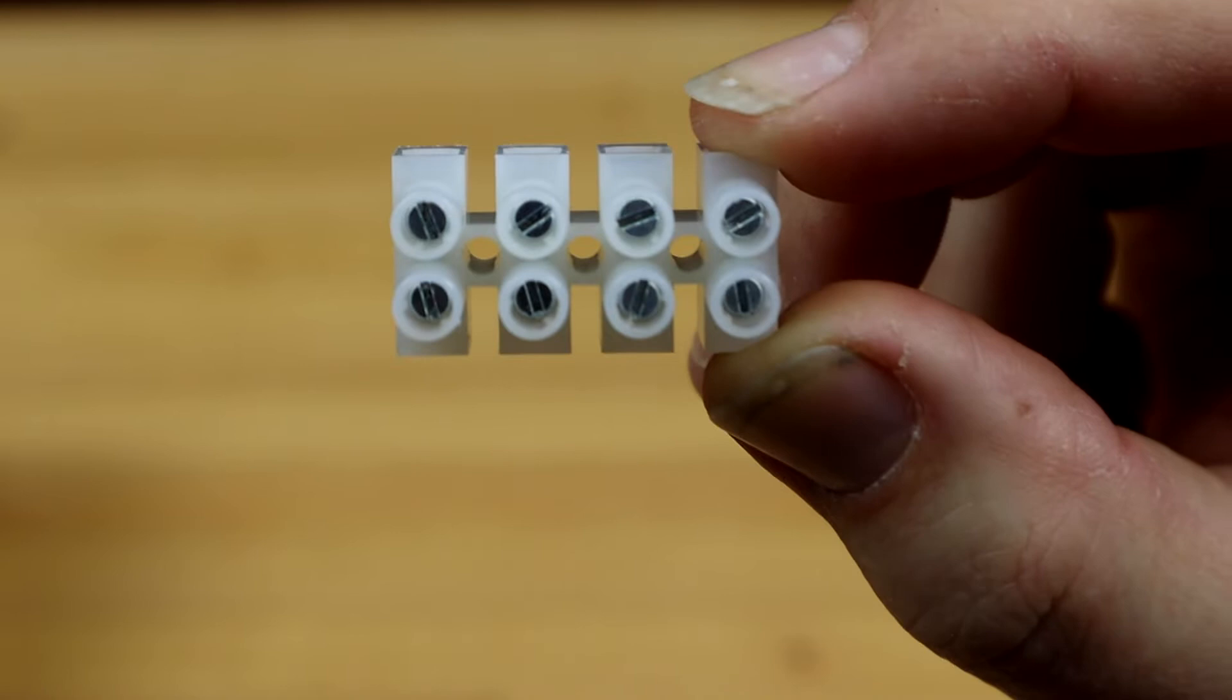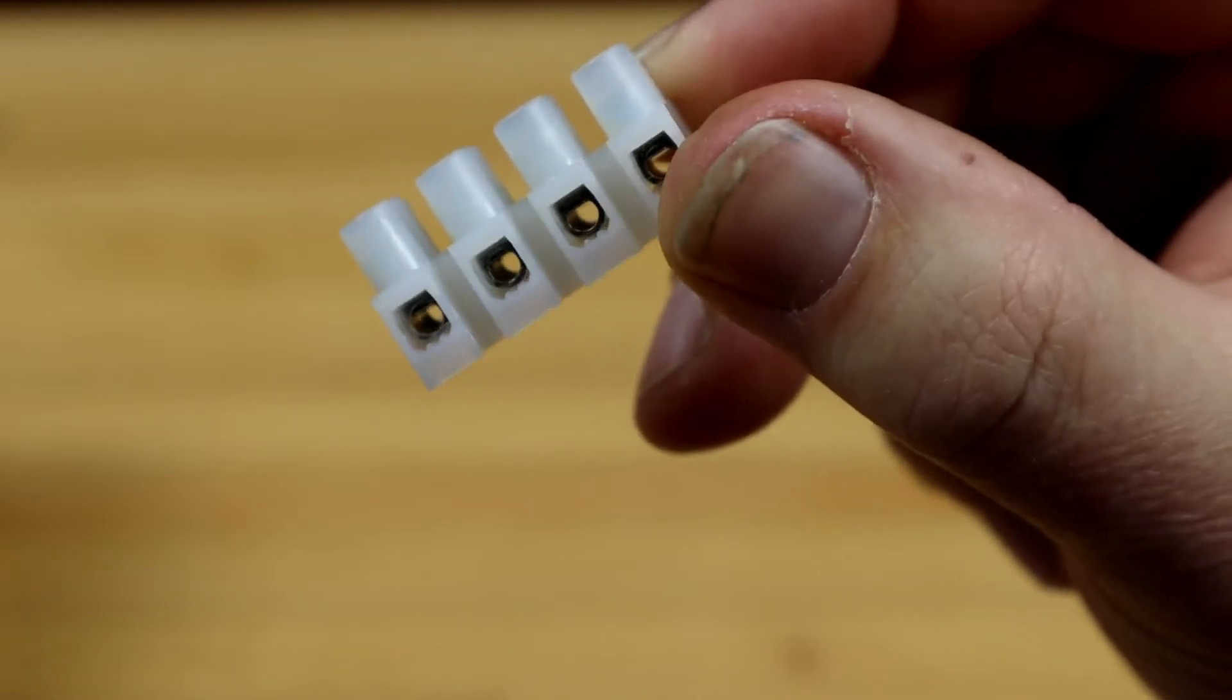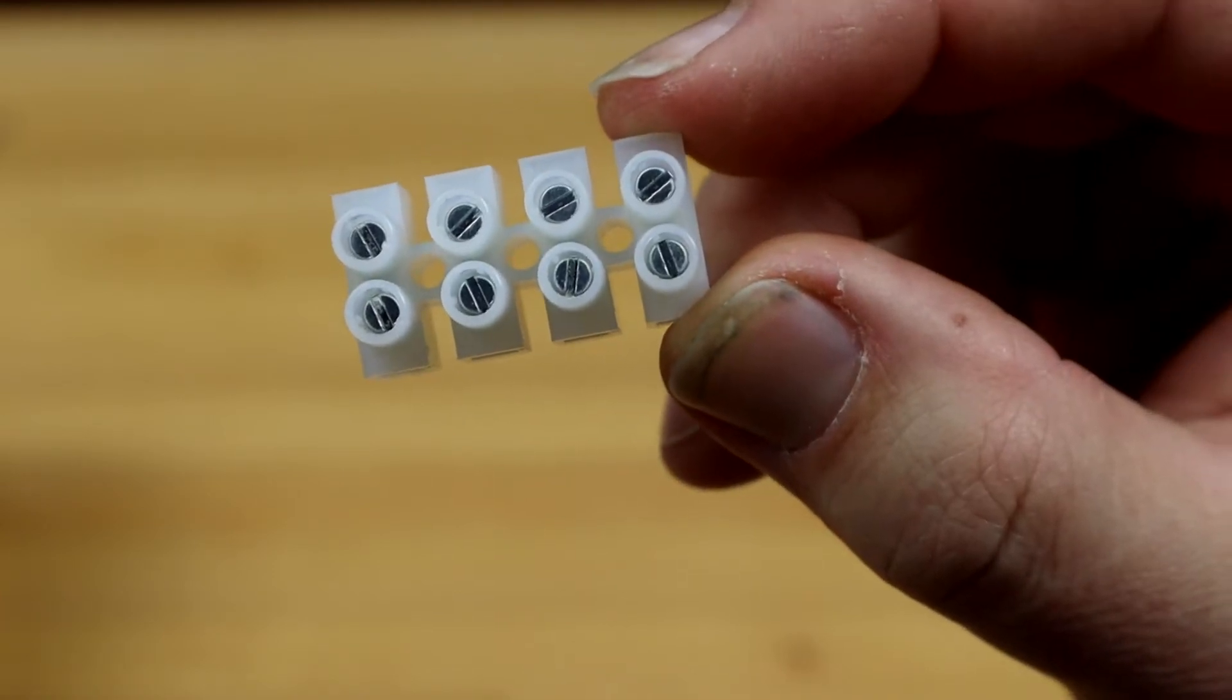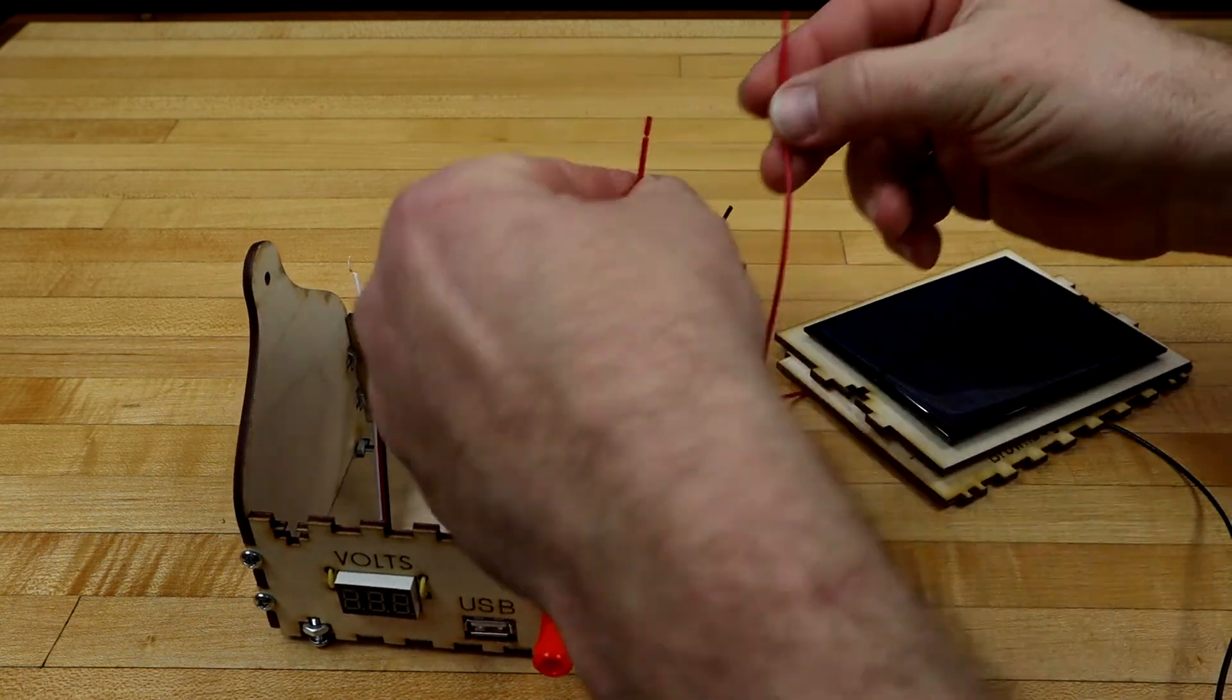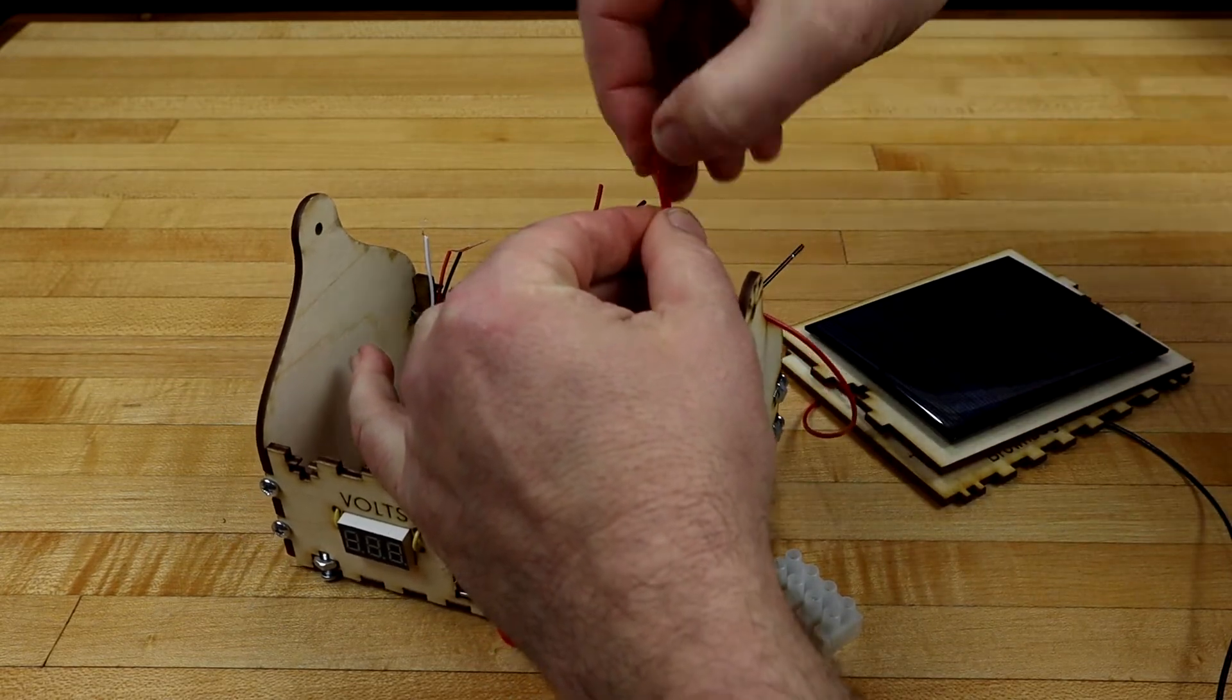Time to wire it up. We're using this four-port screw terminal. Each pair of screws connect electrically to each other. They are tightened down with a simple screwdriver. All the red positive wires will go to one pair of screw-down terminals, and all the black negative wires go to the other. For example, let's twist together the solar cell positive wire and the banana socket positive wire.